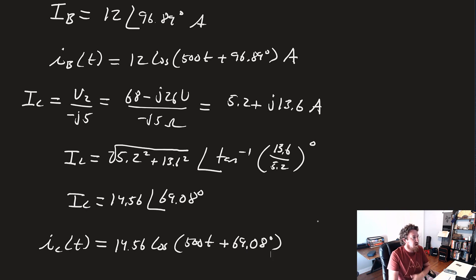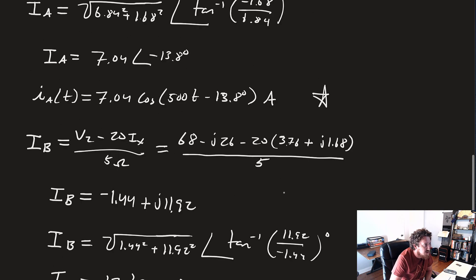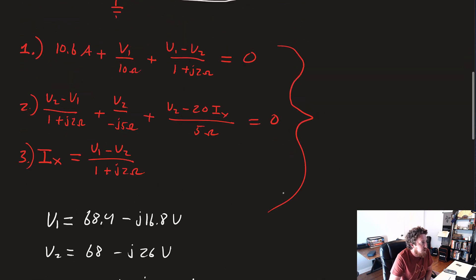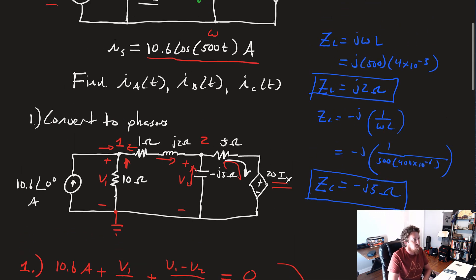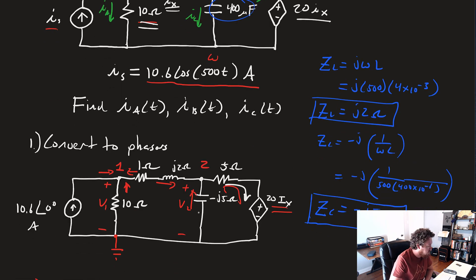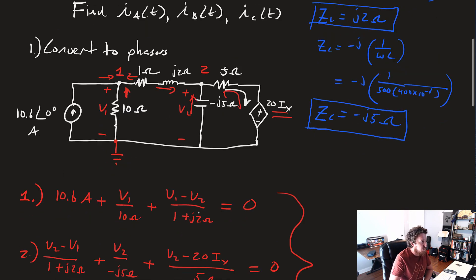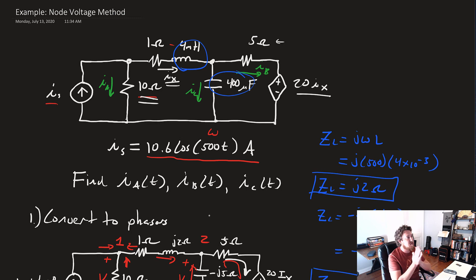And there we go. That is the node voltage method, just as messy and gross as you remember it. But nothing at all different than what you already learned in your circuits one class. Once you convert everything to phasers, it's all just circuits one all over again. As always, if you have any questions, comments, or concerns about this one, please let me know. And if not, see you guys in the next video where we're going to do an example of the mesh current method. See you guys in there, thank you.